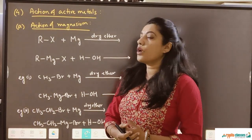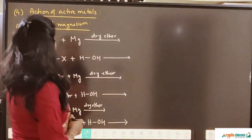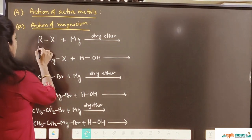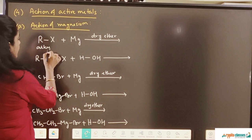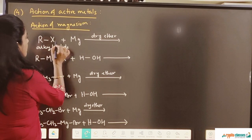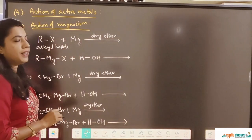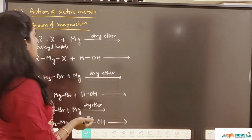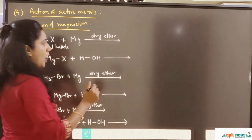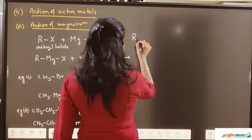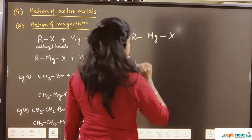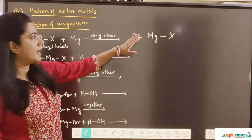Now the fourth reaction is action of active metals. The first reaction will be action with magnesium. I have taken an alkyl halide, RX, reacting with magnesium in presence of dry ether. Magnesium has two valences, so it comes in between R and X, giving us a compound R-Mg-X.